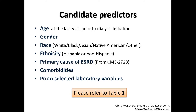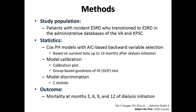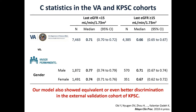The last measurement of each variable prior to ESRD transition was used in this study. Model calibration was assessed by calibration plots and a group-based goodness-of-fit test for survival models. Model predictive discrimination was also assessed using the index of concordance, or C-statistic. To ensure model goodness-of-fit, two separate models were selected for patients with eGFR below 15 and those with eGFR greater than or equal to 15 mL/min prior to dialysis initiation.